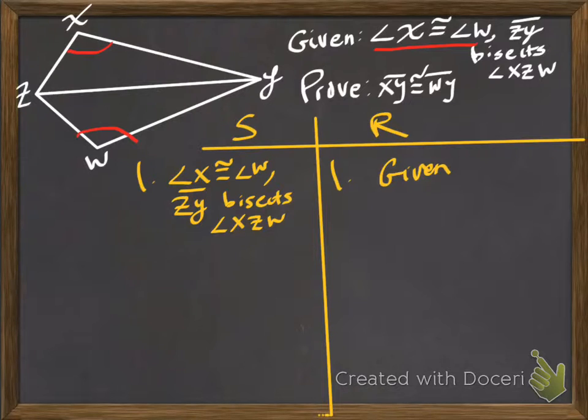And zy bisects xzw. So this line right here, or segment, is cutting this angle in such a way that it bisects it. So I want you to think about what that word means, because the definition of bisect is going to appear somewhere here.